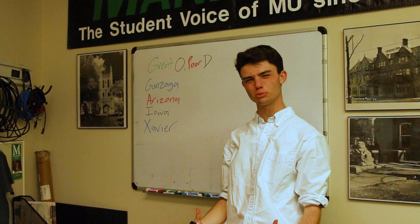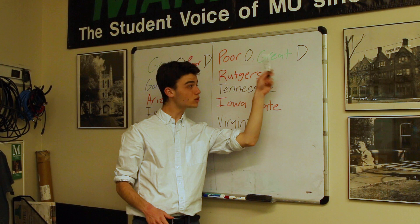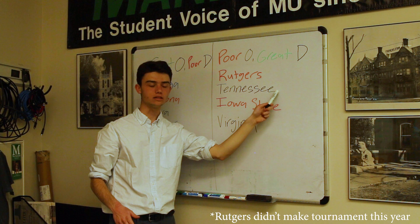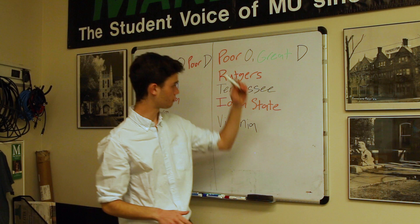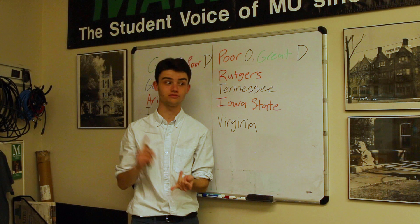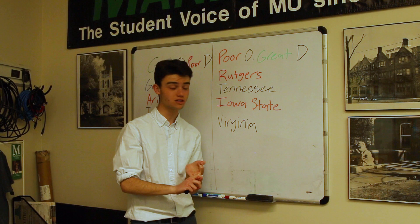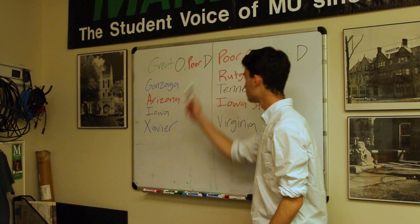Some teams have really good defenses but not amazing offenses: Rutgers, Tennessee, Iowa State, Virginia. All eight of these teams have one exposable flaw, whether offensively or defensively. If a team like Tennessee gets matched up against a team that plays very fast and shoots a lot of threes and is really extra aggressive, that's where you might want to consider picking against them in the first round. Or if you've got a team with a very poor defense, I would suggest picking against them more in the later rounds.